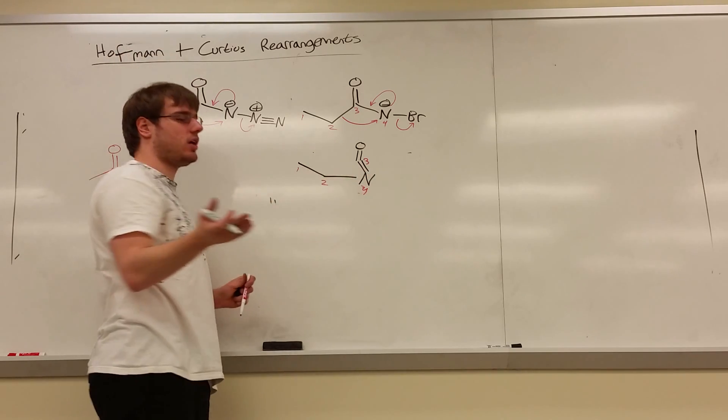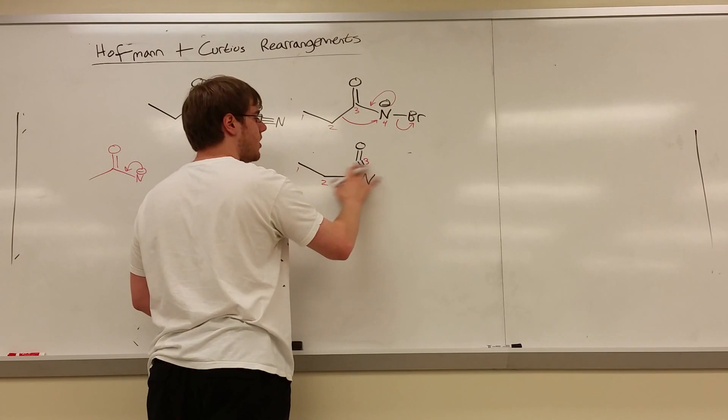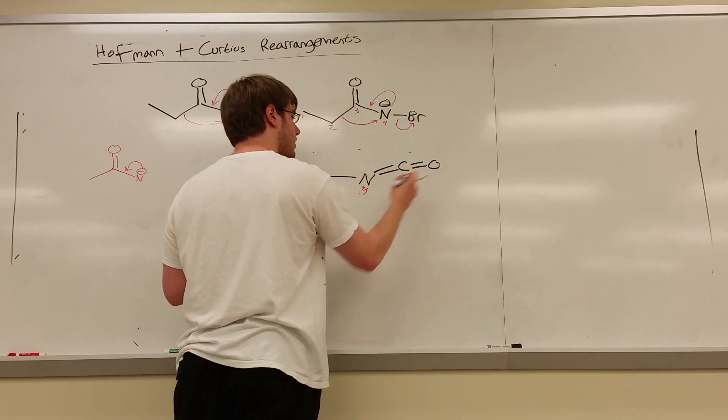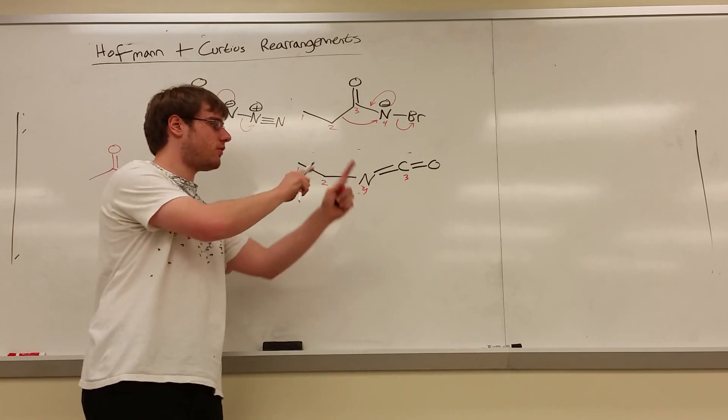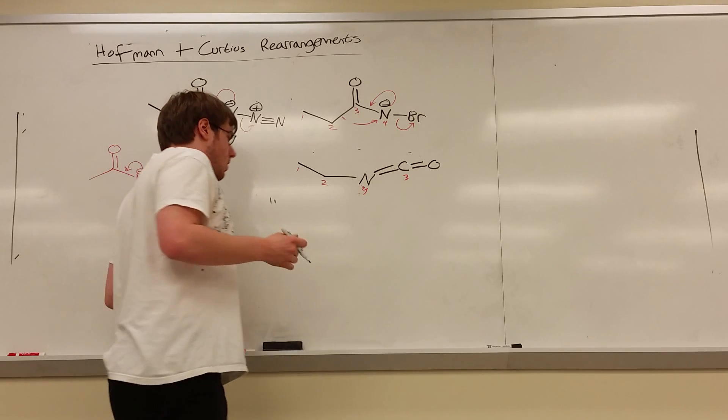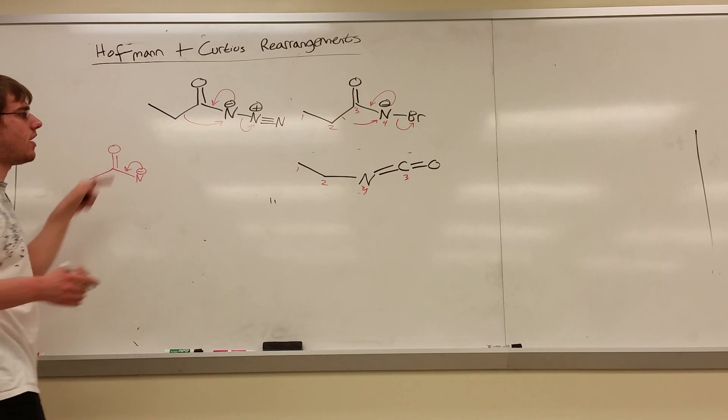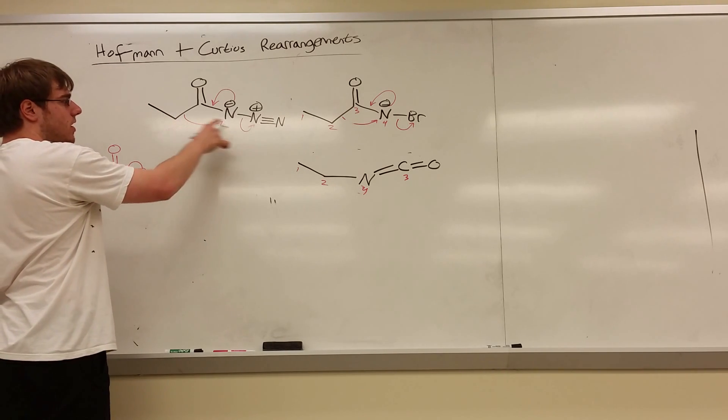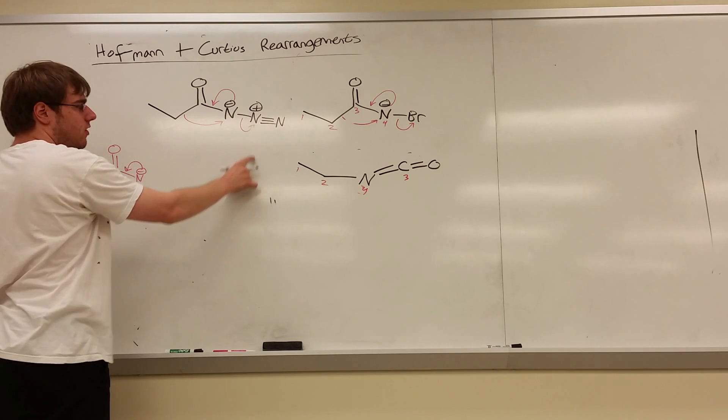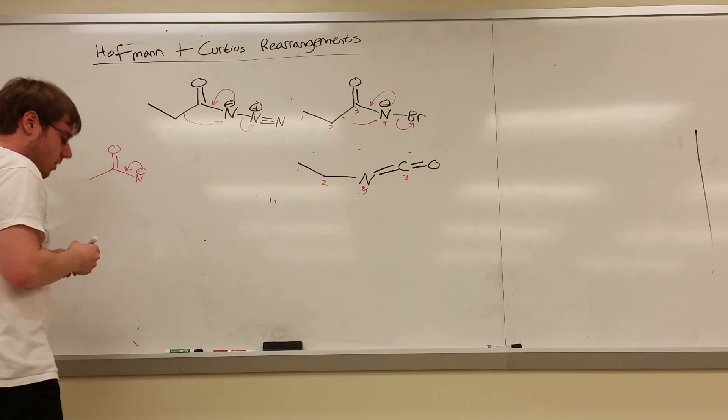So based on that, our next intermediate is: we're breaking the bond between two and three and connecting two to four. So we have one, two, the bond between two and four. The bond between two and three was broken, so two could attack four. And four made a double bond to three. Three still has its double bond to O. We have nitrogen, double bond carbon, double bond O. And it turns out that this is the same intermediate for both rearrangements. This intermediate right here is the same intermediate for both rearrangements from this point over.